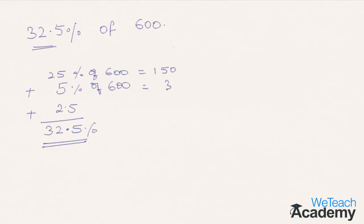As mentioned in the earlier example, 2.5% is always half of 5%, which is 15. Sum up all these answers and you get 195. That was very easy, right?